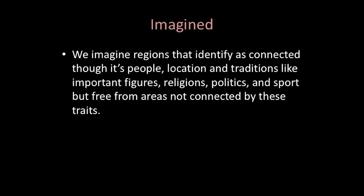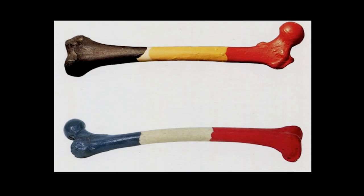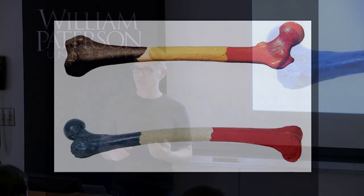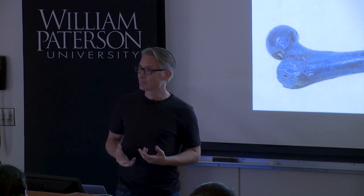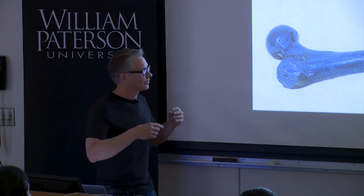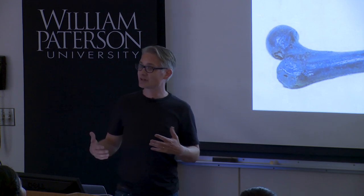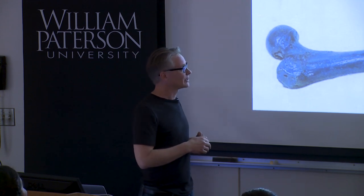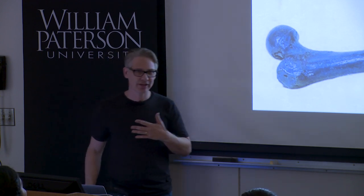Now, 'imagined': we imagine regions that identify as connected through their people, locations, and traditions — like important figures, religions, politics, and sport. I want to talk about Marcel Broodthaers — his image is called The Femur of a Belgian Man and a French Woman. Like Dion, it's a very simple approach to a complex idea of identity: that our nationality could be bone or marrow deep. Yet we're always changing as individuals by what we experience outside of where we come from — our identity might be bone deep, but we know it very personally.